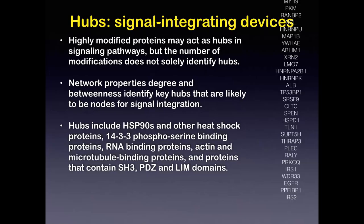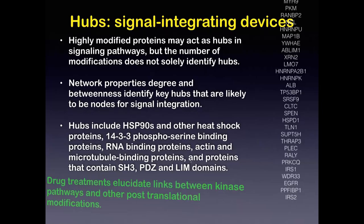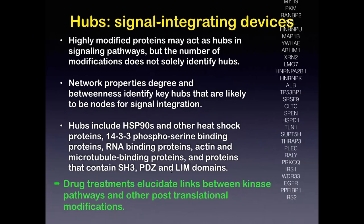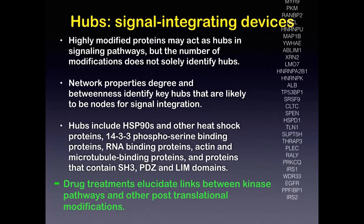Highly modified proteins may act as hubs, but the number of modifications does not solely predict hubs, and whether hubs are predicted just by being well-studied in PPI databases needs follow-up. Network properties of degree and betweenness identify key hubs likely to be nodes for signal integration — we hope they are genuine signal integration nodes and not just more-studied proteins. These include Hsp90, 14-3-3 proteins, RNA binding proteins, actin and microtubule binding proteins, and proteins with SH3, PDZ, and LEM domains. We also have drug treatment data, and another way of looking at the data is to filter by drug treatment response.